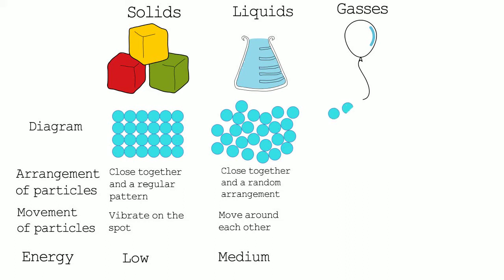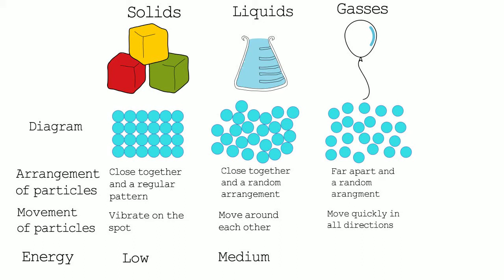The final state of matter is gases. The particles in gases are far apart and are in a random arrangement. The particles move around quickly in all directions. A gas will also completely fill their container and can be compressed or squashed. Particles in a gas state have more energy than when they are in the previous two states.